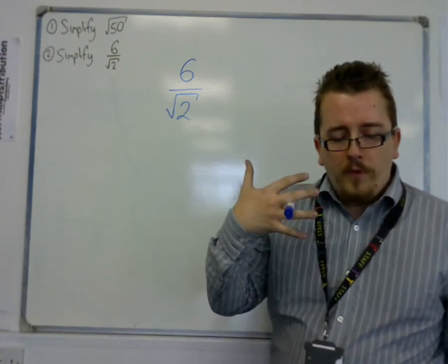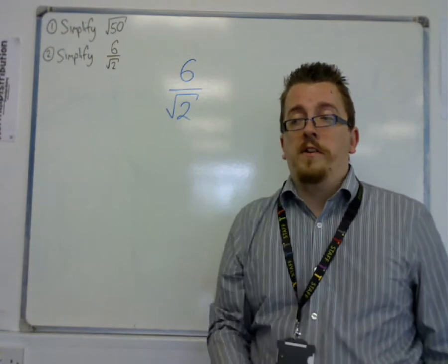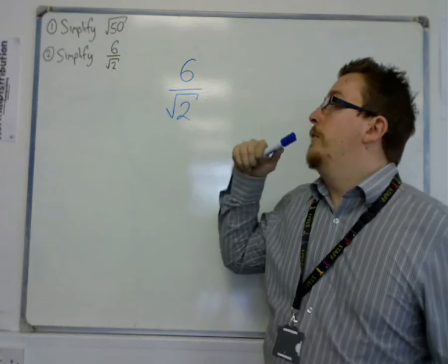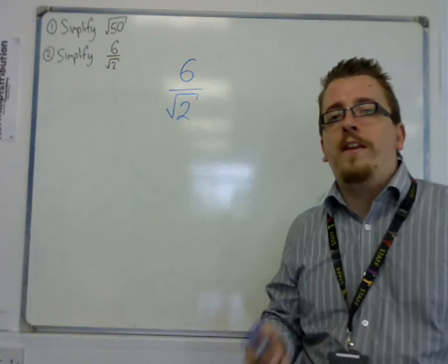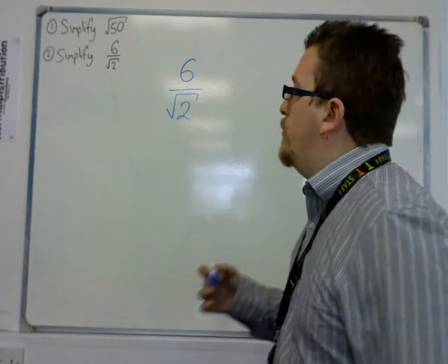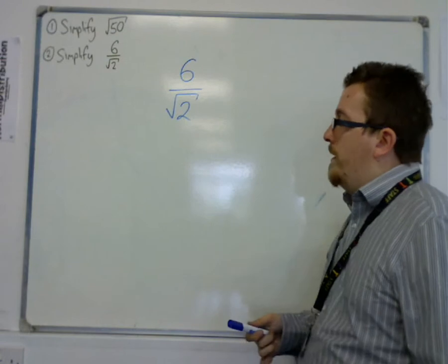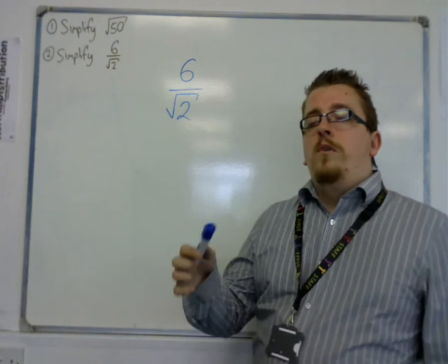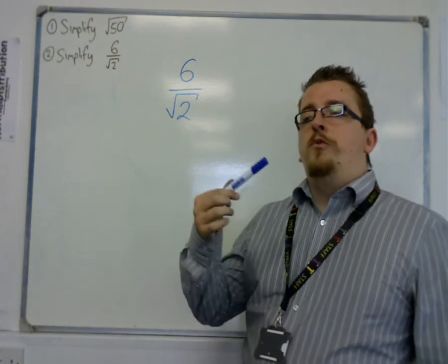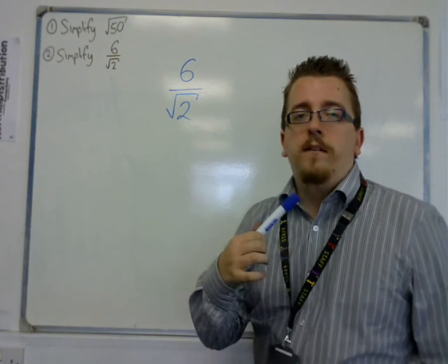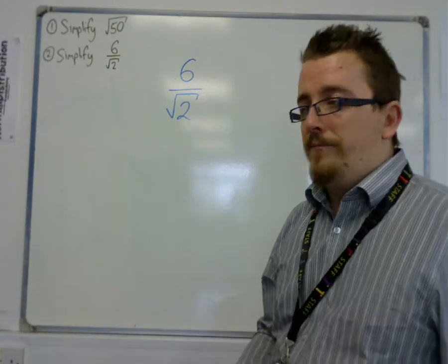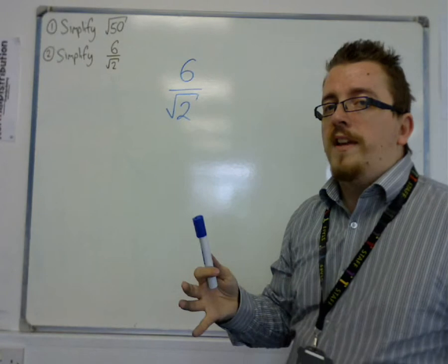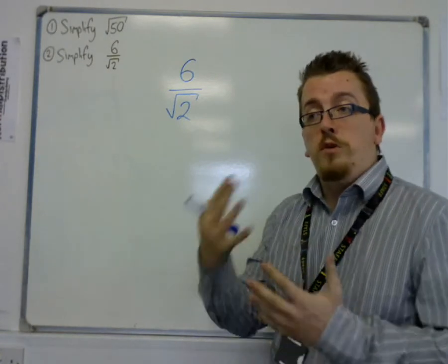Why is it called rationalizing the denominator? Well, root 2, a surd, is irrational, and what that means is that it can't be written as a fraction. So it can't be written as a fraction, so we can't do really much with it. And we don't particularly want surds to be in the denominator. So with surds being irrational, we want to rationalize the denominator to make the irrational number not be there. There's no way really of getting rid of that irrational number altogether, but it will put it into the numerator for us.